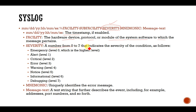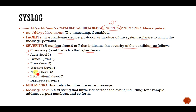Severity is a number from 0 to 7 indicating the severity of the condition. Level 0 is the highest — an emergency — meaning something critical like a router failure has occurred and immediate attention is required. Level 1 is alert, level 2 is critical, level 3 is error, level 4 is warning, level 5 is notice, level 6 is informational, and level 7 is debugging. Based on the severity value, the network manager attends to and monitors the network accordingly.